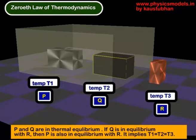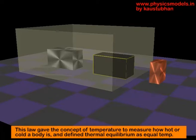If you have 20 objects in this image, all the 20 objects will be in thermal equilibrium if their temperatures are the same. So the zeroth law establishes temperature as an all important thing.